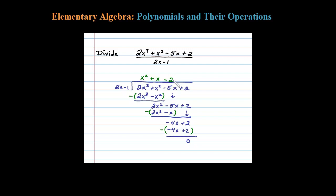So when I divide these polynomials, it goes in evenly—there is no remainder. So the answer here is x squared plus x minus 2.